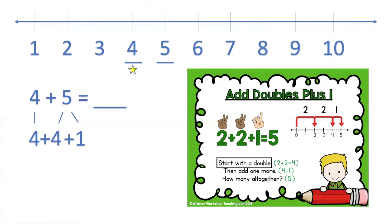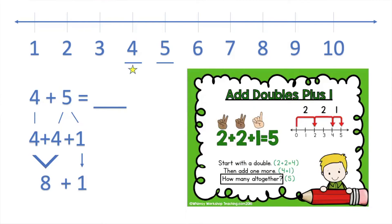This is a great time to use add doubles plus one because four and five are only one apart on the number line. We start with the smaller number, four, and then break down the bigger number, five, into the double plus one. So now it's four plus four plus one. First, add the doubles: four plus four equals eight. Add one more — bring down that one. Now it says eight plus one. How many all together? Eight plus one is nine. So four plus five equals nine.